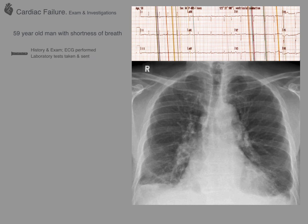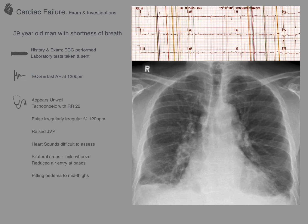We've taken our history, so now we perform a physical examination and get an ECG. The patient's ECG shows a regularly irregular rhythm with no visible P waves and is fast at 120 beats per minute — we can conclude this patient is in fast atrial fibrillation. On examination he appears unwell, tachypnoeic with a respiratory rate of 22, pulse is fast and irregularly irregular, he has a raised JVP, bilateral crepitations and mild wheeze at the lung bases, reduced air entry at the bases, and pitting oedema to his mid-thighs.